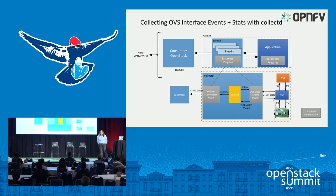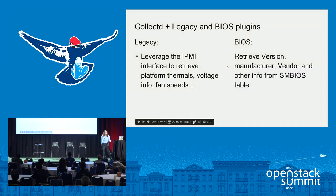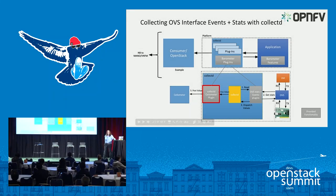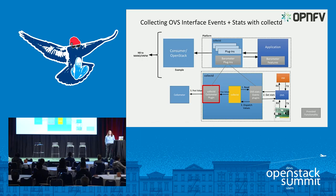In this case we have CollectD running. After a particular interval it will go to the OVS stats and events plugins and query the underlying application for data and return it. When data returns to CollectD, any available write plugins will be triggered. We have a plugin for OpenStack which will appropriately format the data and pass it off to Ceilometer — and in the very near future it will be passing this data to Gnocchi. This data will then be available for any application sitting on top of OpenStack or in any format supported by CollectD.